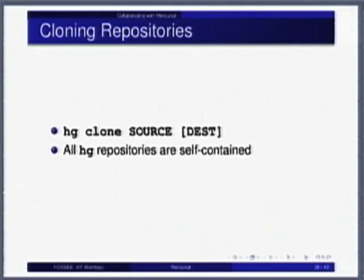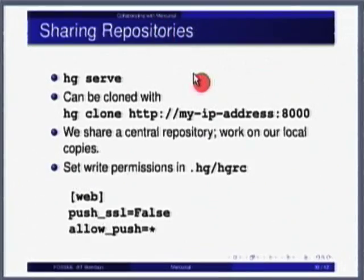Just bear with me for a little while. First thing: we clone — I can clone by saying hg clone some source, optionally specify a destination. Next, given a repository, I can serve an HTTP server from there from where other people can pull, from where anybody can clone. I can also view it using a browser.